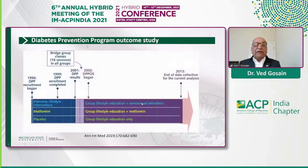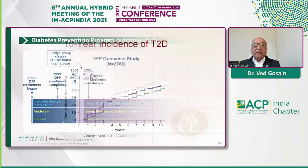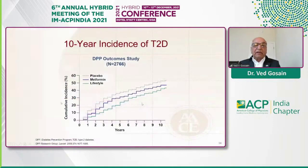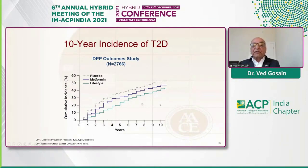In the Diabetes Prevention Program long-term follow-up — another 10-year follow-up up to 2013 — the cumulative incidence of diabetes was significantly lower in the lifestyle group, then metformin, and then placebo. Almost 50% of patients in the placebo group developed diabetes.